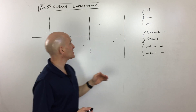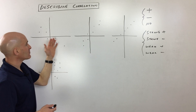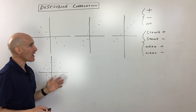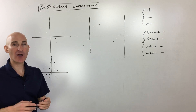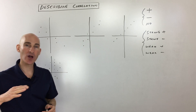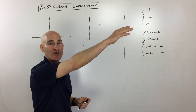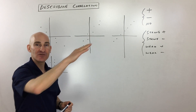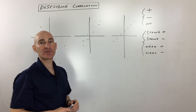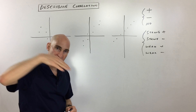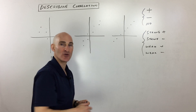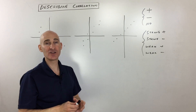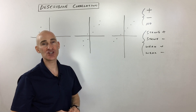Basically, we're plotting some points on scatter plots, and we're trying to figure out if we draw a line of best fit, would that line have a positive slope — meaning going up to the right — would it have a negative slope, meaning going down to the right, or would there be relatively no correlation.